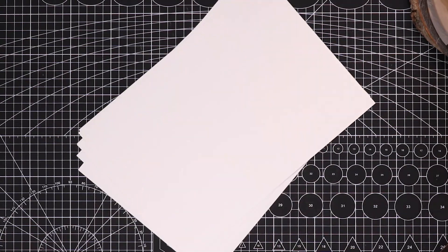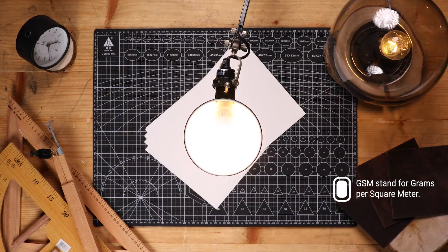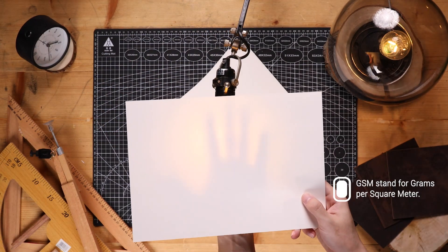When selecting the paper, you're suggested to pick 150 GSM paper that is thick, stiff, but translucent enough.